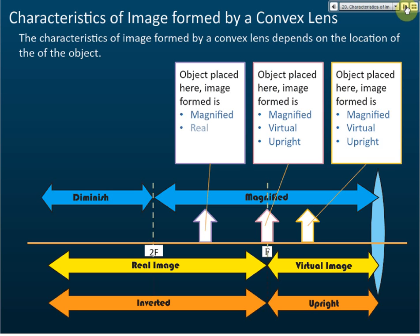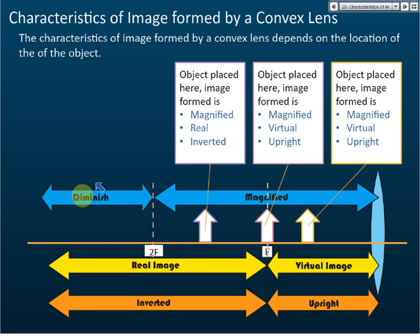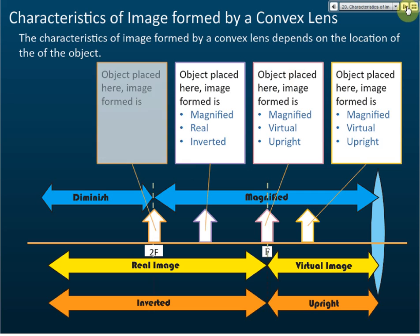If we put the object exactly at 2F, what do you think? The image is the same size, and it's real and inverted. From F onwards, the image is real and inverted. At 2F it's the same size; less than 2F it's magnified; more than 2F it's diminished. So object placed at 2F gives an image that is same size, real, and inverted.